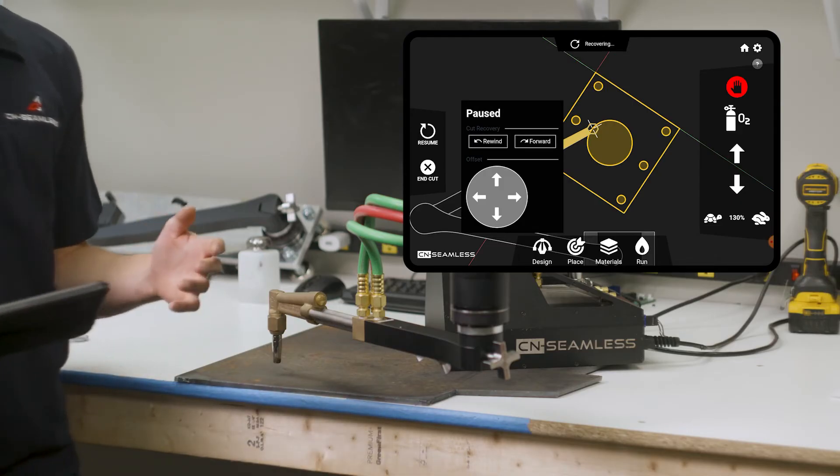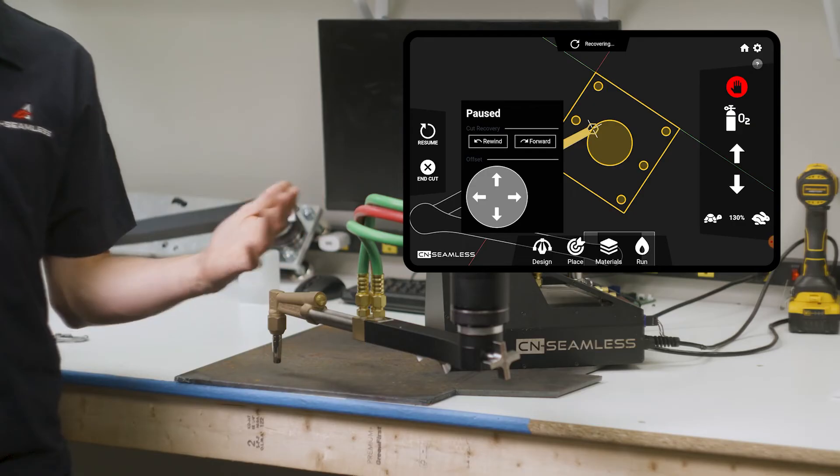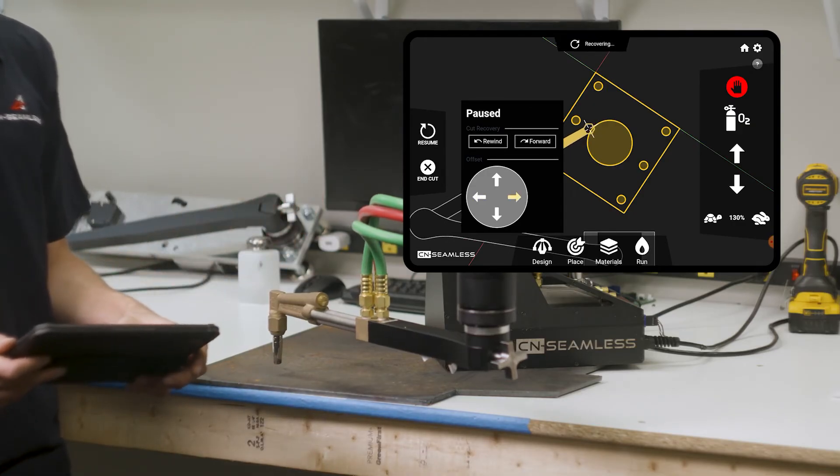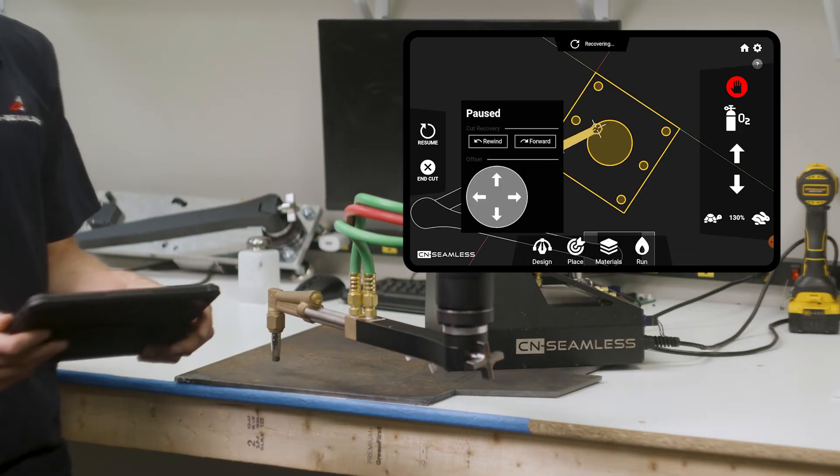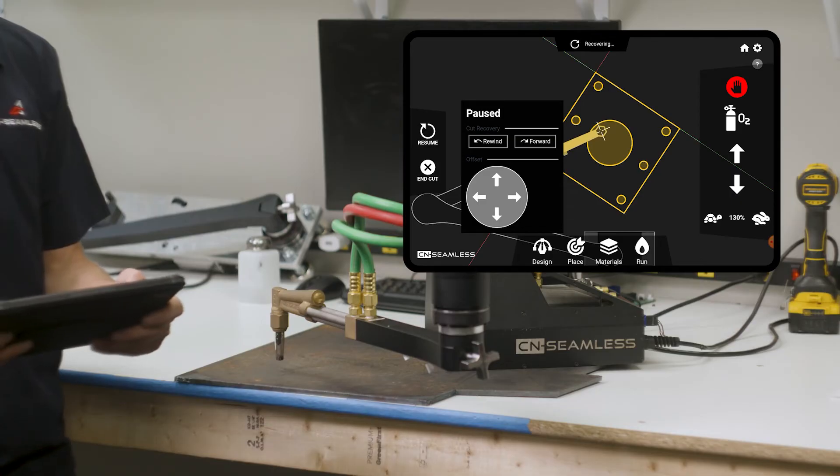Once you're ready, you don't want to have to pierce right on your nice edge because that's going to leave a nasty cut. So you can use these offset buttons down below to offset the torch and give it a new pierce point. So we're going to do a nice pierce right in the middle of the circle so it's not going to interfere with our cut.